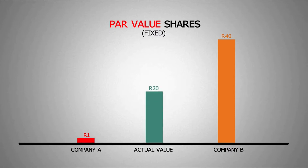To balance the books, the par value plus the share premium must equal the actual value. Therefore, in the case of Company A, the share premium is a positive value of 19 rand, and the opposite is true for Company B, which has a negative share premium of 20 rand.